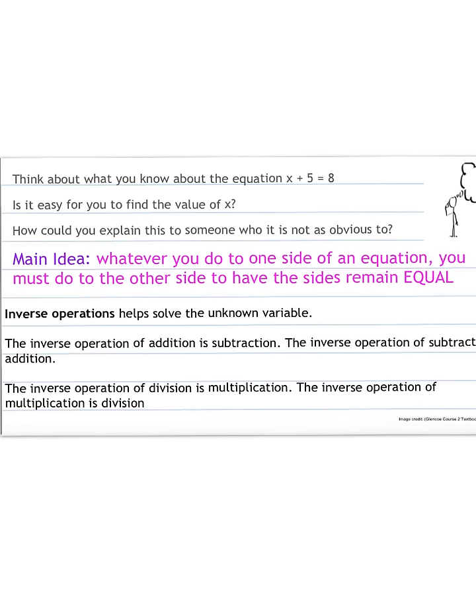How would you explain this to someone that it's not so easy for? For you it might be really easy to solve for x, but for somebody that doesn't understand it quite so easily, how would you explain to them how they could solve for x?